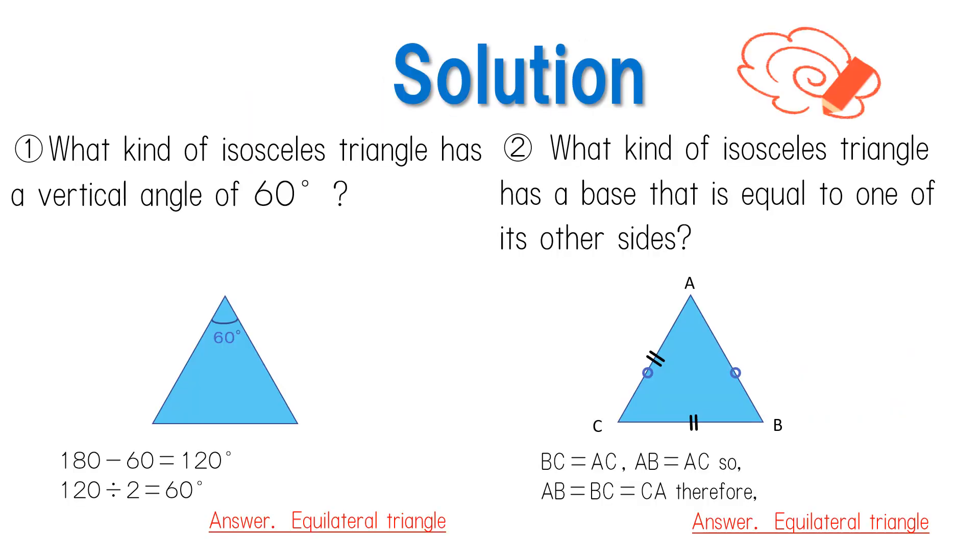Now let's check our answers. An isosceles triangle with a vertical angle of 60 degrees is an equilateral triangle because the sum of the interior angles is 180 degrees and the base angle is equal to 180 minus 60 which is 120. So 120 divided by 2 is 60 degrees and all interior angles are 60 degrees.